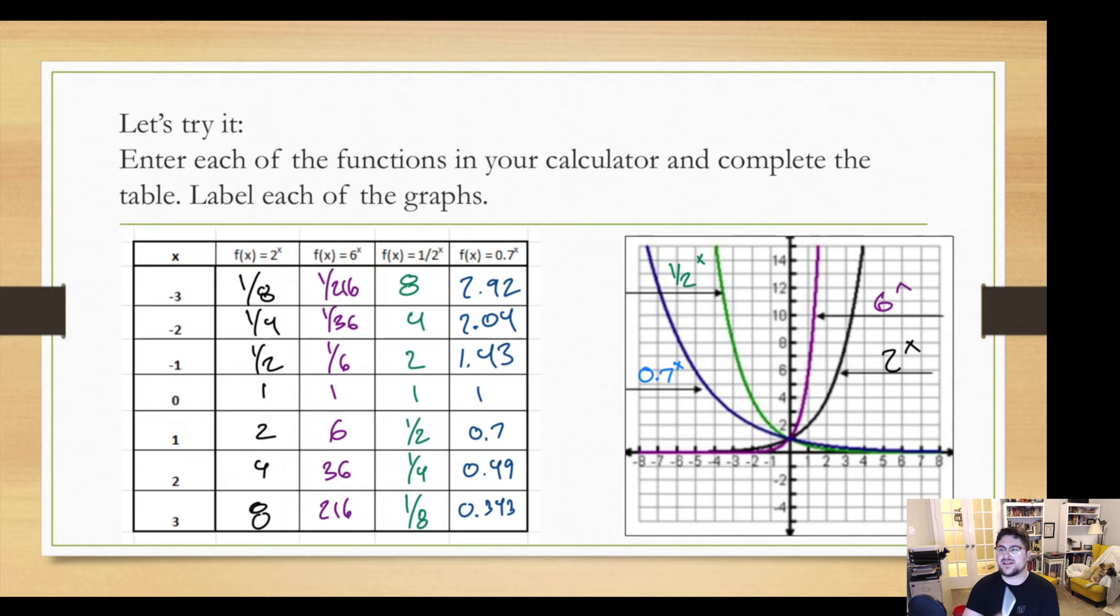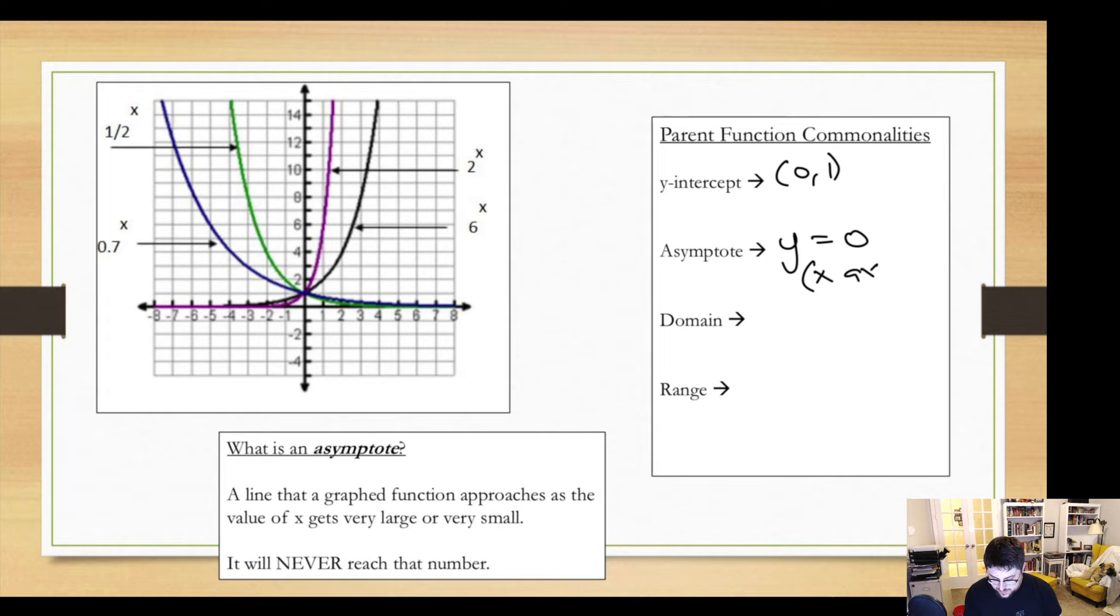They get very, very small, but they don't actually touch zero. It's that annoying kid in class who's like I'm not touching you, I'm not touching you. That's what we're dealing with here. So they'll never touch it, but they'll get very, very close to it. And what that line is for all these parent functions is y equals zero, the x-axis.